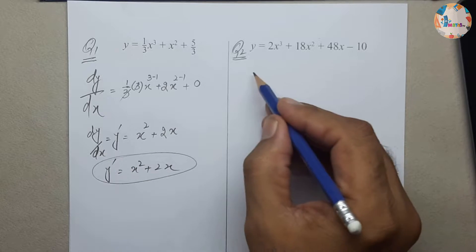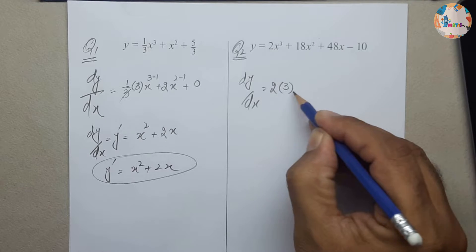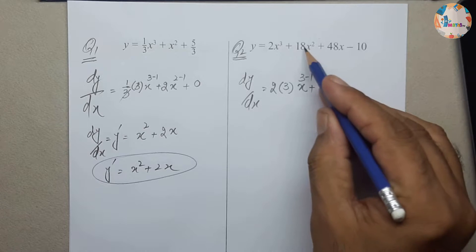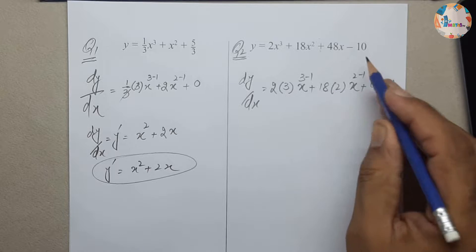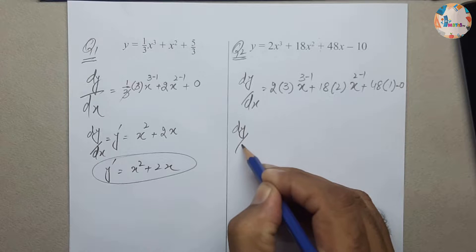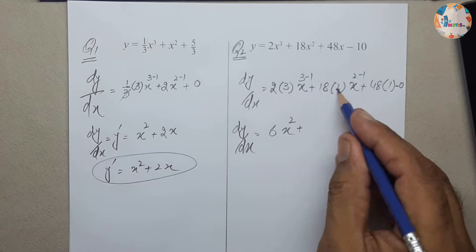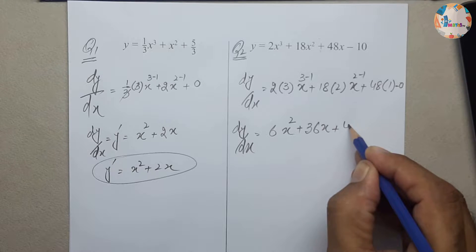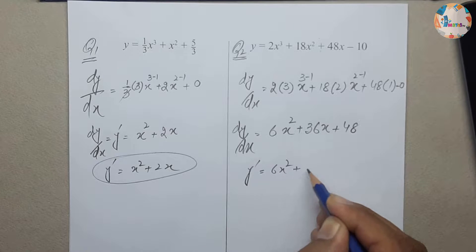For the second example, dy/dx = 2·3·x^(3-1) + 18·2·x^(2-1) + 48·1 − 0. Simplifying: 2×3 = 6, so we get 6x^2; 18×2 = 36, giving 36x; plus 48. So y' = 6x² + 36x + 48.